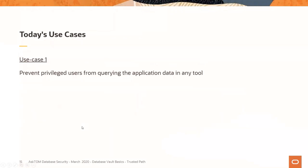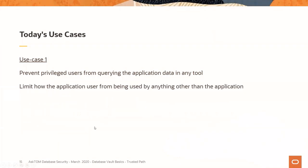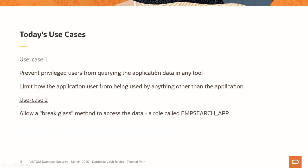Our use cases today: first, we want to prevent privileged users from querying application data in any tool. Second, we want to limit how the application user can be used from any location other than the application — that's the trusted application path concept, where the username and password can only be used from the application servers. Third, we need a break glass mechanism using a role called M_SEARCH_APP, but we want to limit how and where that role can be used.